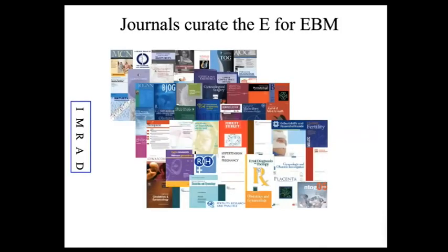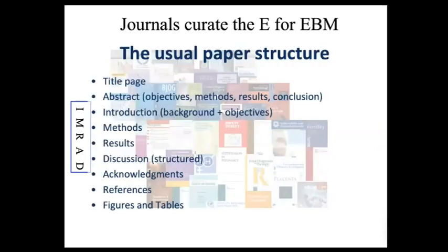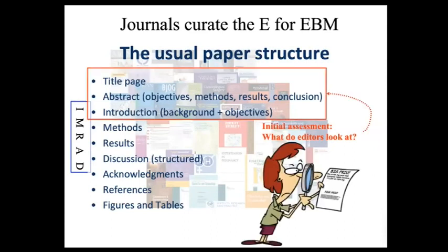Papers have a structure called IMRAD: it starts with the title page and abstract, followed by Introduction, Methods, Results, and Discussion, then acknowledgements, references, tables, and so on. The initial assessment by editors is usually based only on the title, abstract, and introduction. Nobody reads your cover letter, your results section, or your discussion section at the initial stage — your title, abstract, and introduction have the strongest influence on that first assessment.